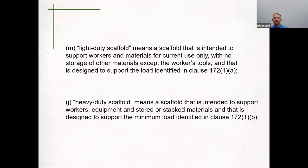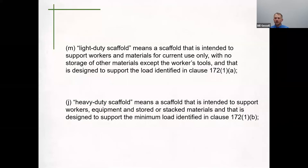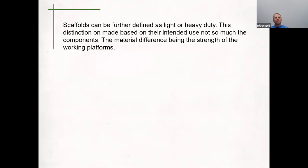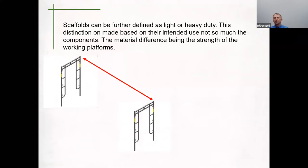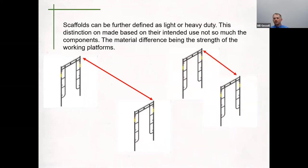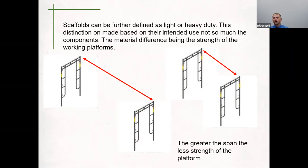If you read through 172, 1A and B, it becomes slightly confusing with information about perpendicular lines and kilonewtons. To give a more straightforward idea: the light duty and heavy duty distinction is made based upon their use and not so much the components. The material difference is the strength of the working platforms. When you have stored and stacked materials, we want to look at the distance between the scaffold frames, as that largely determines the working load and the strength those planks can support. The greater the span, the less strength of the platform. When selecting scaffolding, make sure you've selected the appropriate frames for the work and the appropriate planking and span between those frames for the intended use.